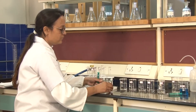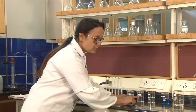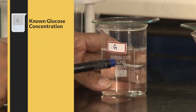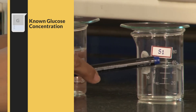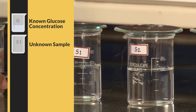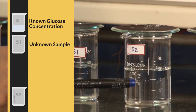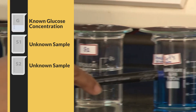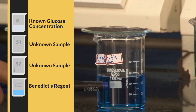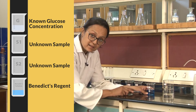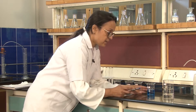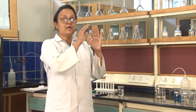The setup for the experiment has many components for testing the glucose concentration of unknown samples. G is the known glucose concentration, S1 is unknown sample 1, S2 is another unknown sample. This is the Benedict's solution — the reagent used to test reducing sugar — and W is distilled water.